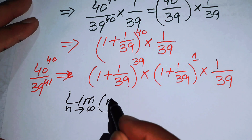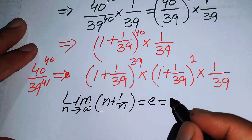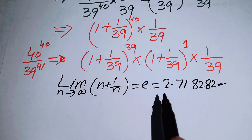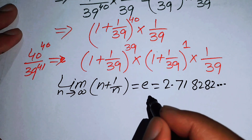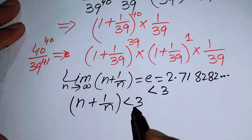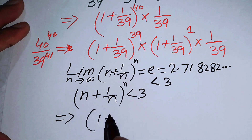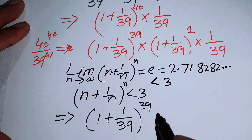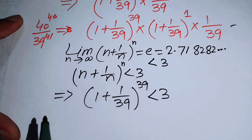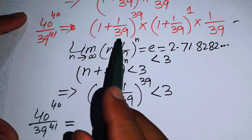The limit law states: as n approaches infinity, (n plus 1 over n) to the power of n equals e, where e equals 2.71828... Since e is less than 3, we conclude that (1 plus 1 over n) to the power of n is less than 3. Therefore, (1 plus 1 over 39) to the power of 39 is also less than 3. Substituting this into our expression gives 40 to the power of 40 over 39 to the power of 41.